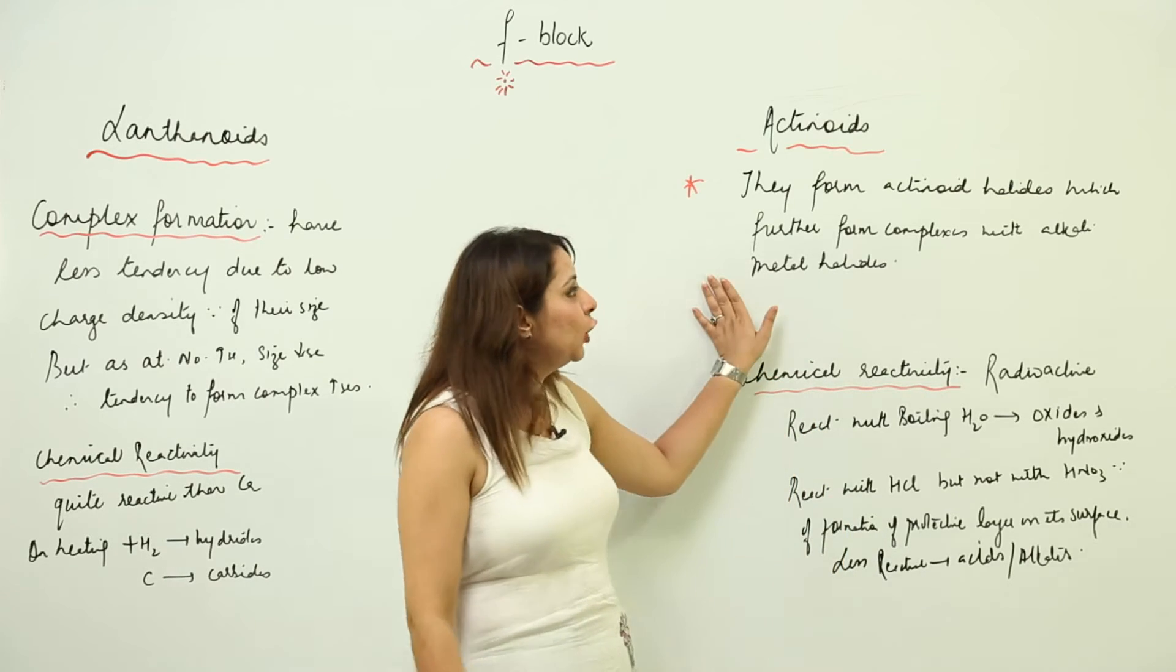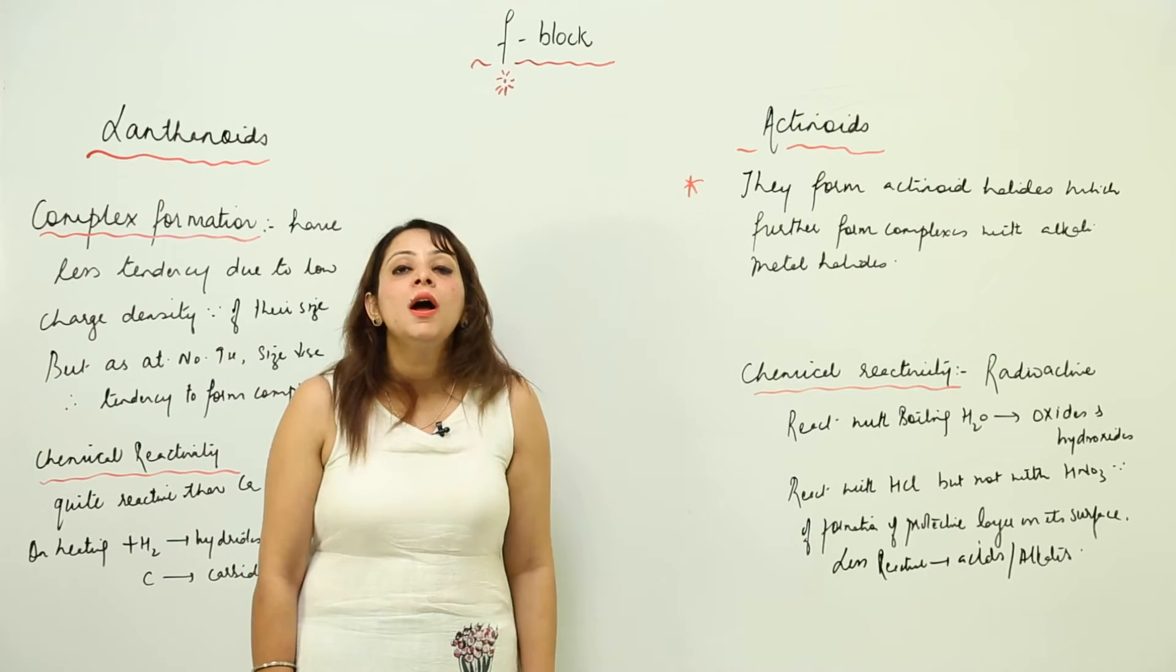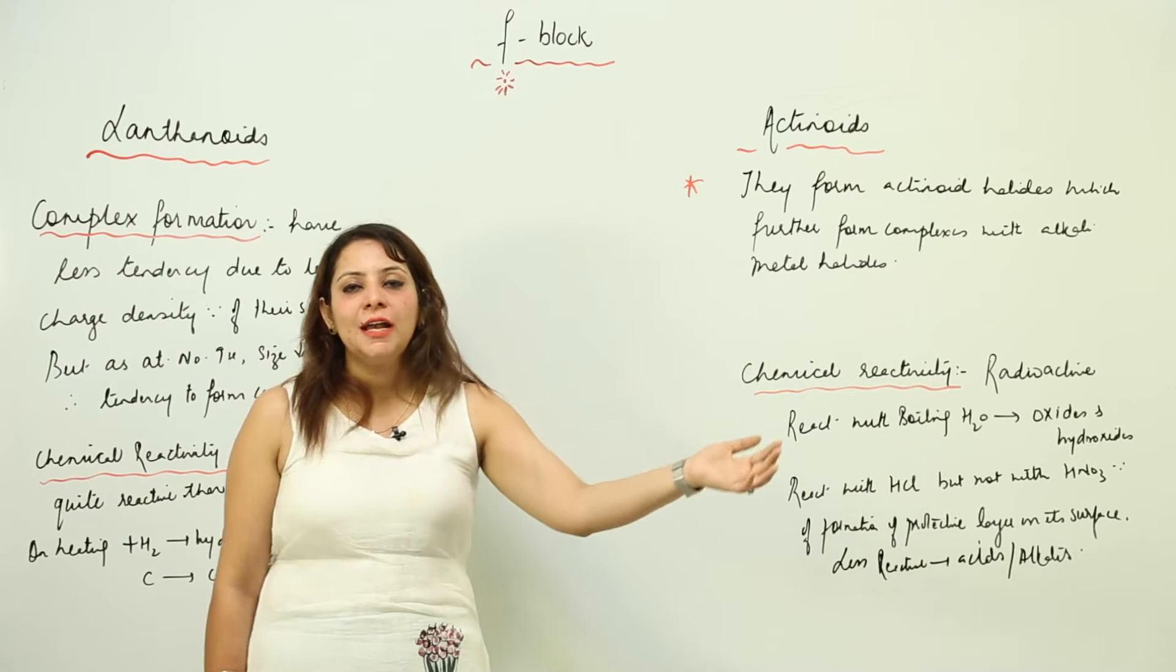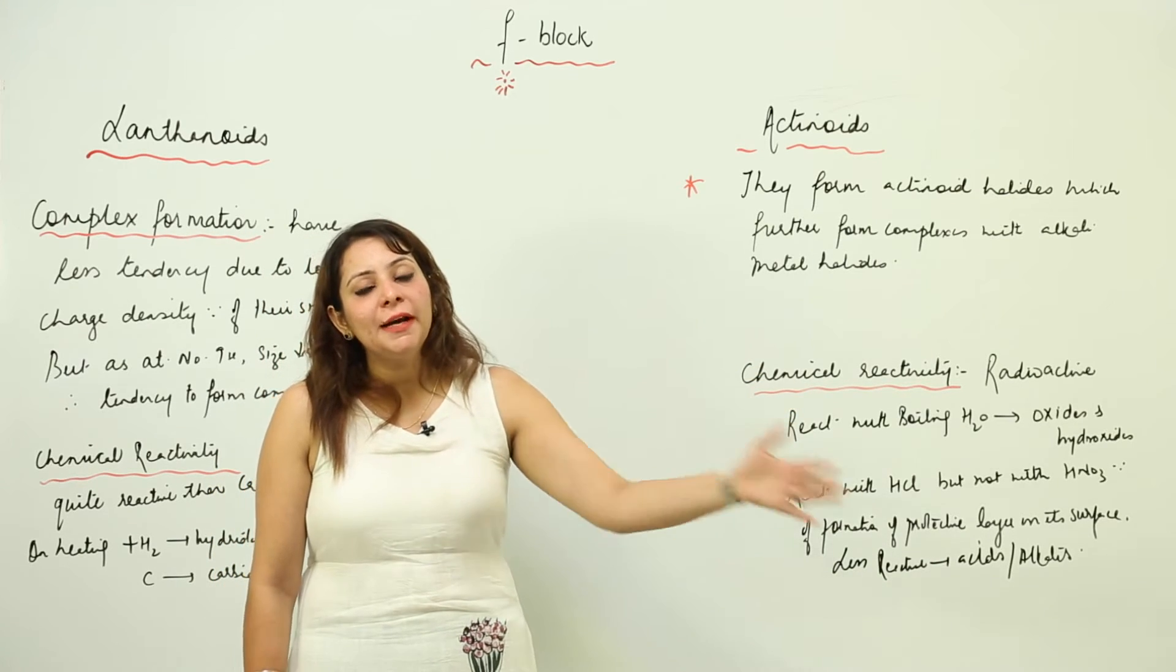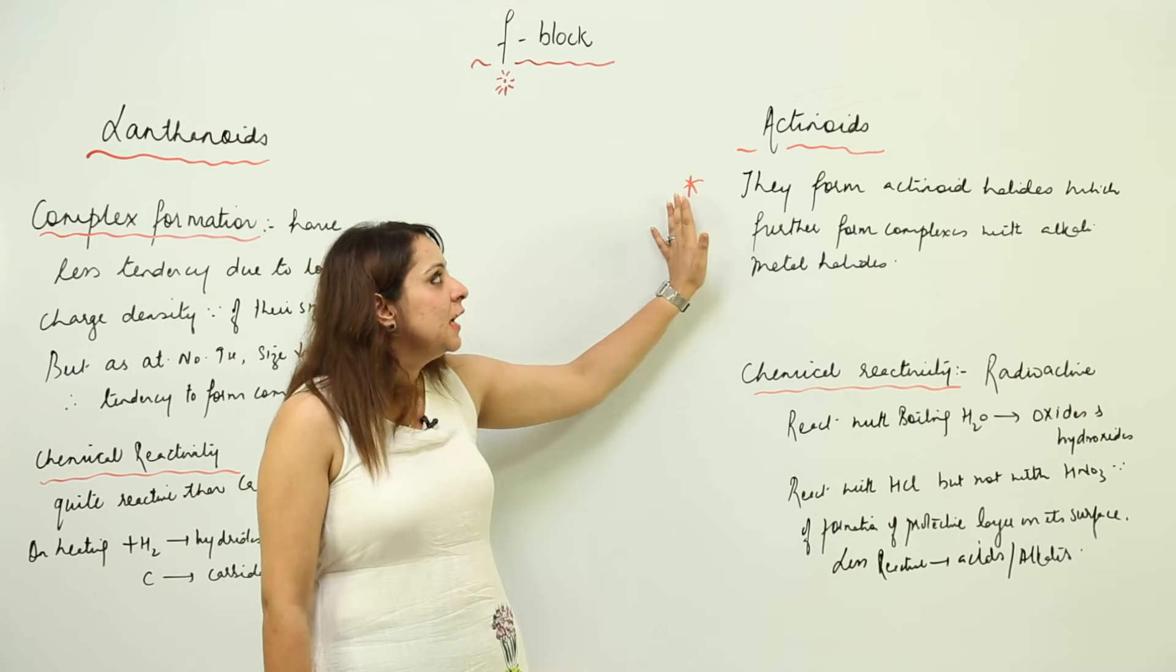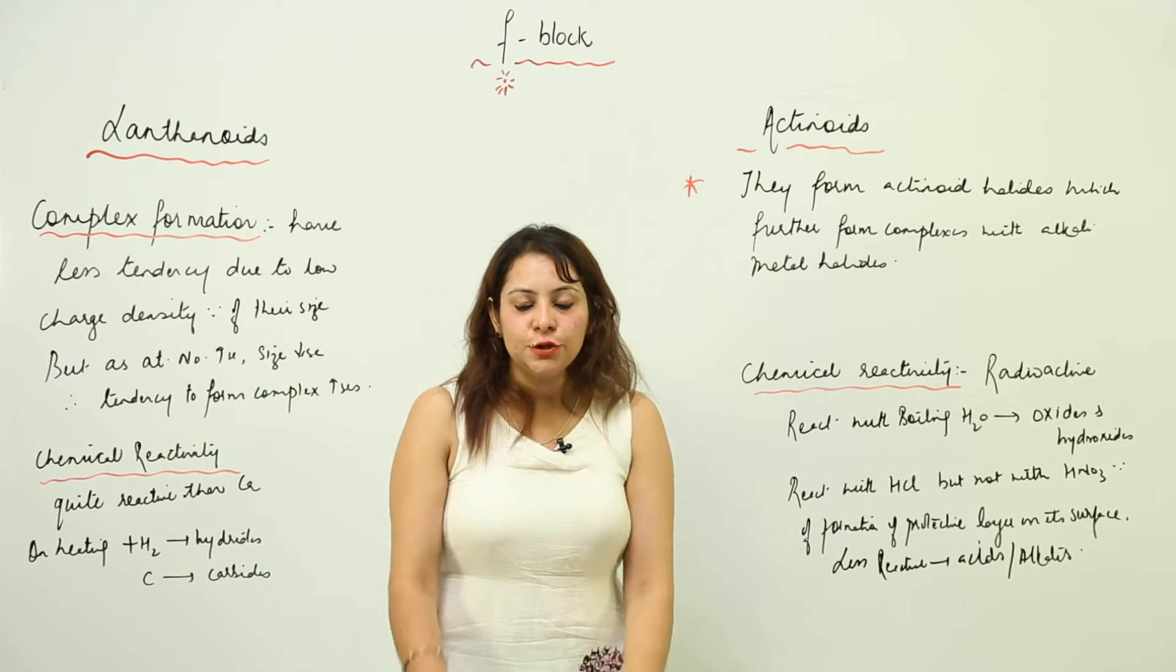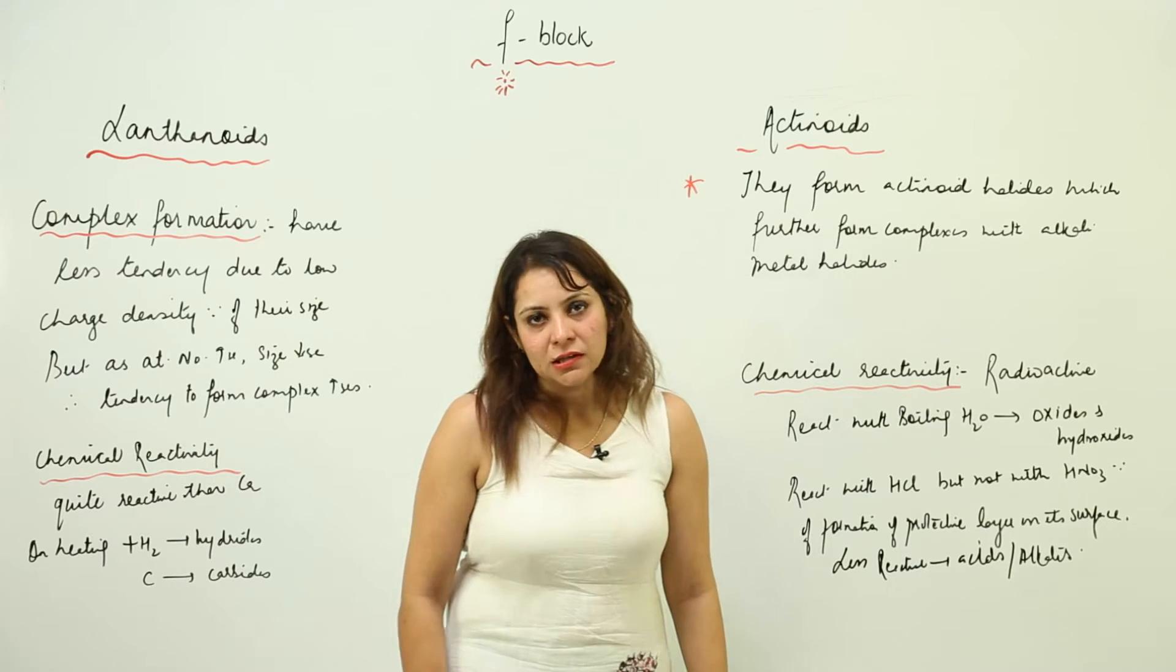If we talk about actinoids, again their tendency is also low, but still they form actinoid halides. They combine with halogens to form their respective halides, and those halides can combine with alkali metal halides forming complexes. In a similar way, as atomic number increases, size decreases due to actinoid contraction, therefore the tendency to form complexes again increases.